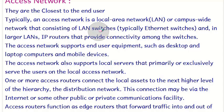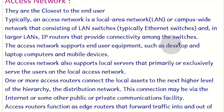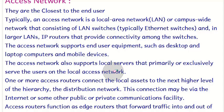The access network is the closest to the end users. An access network is a LAN or campus-wide network consisting of LAN switches, and for larger LANs, IP routers that provide connectivity among the switches. The access network supports end-user equipment — whether fixed desktops, laptops, cameras, or mobile devices — and also supports local servers that primarily serve users on the local access network.